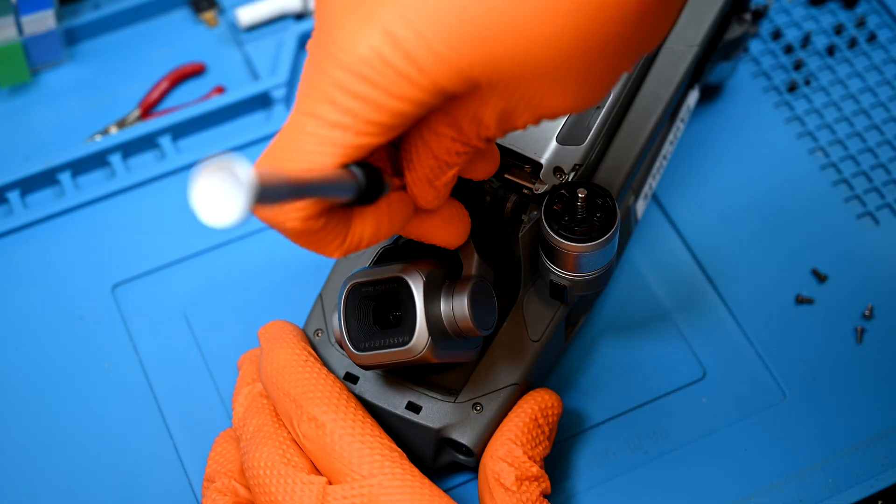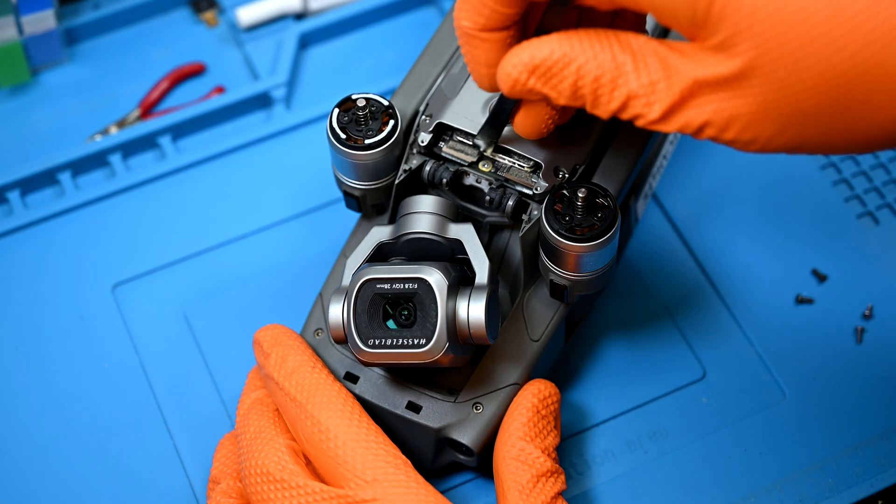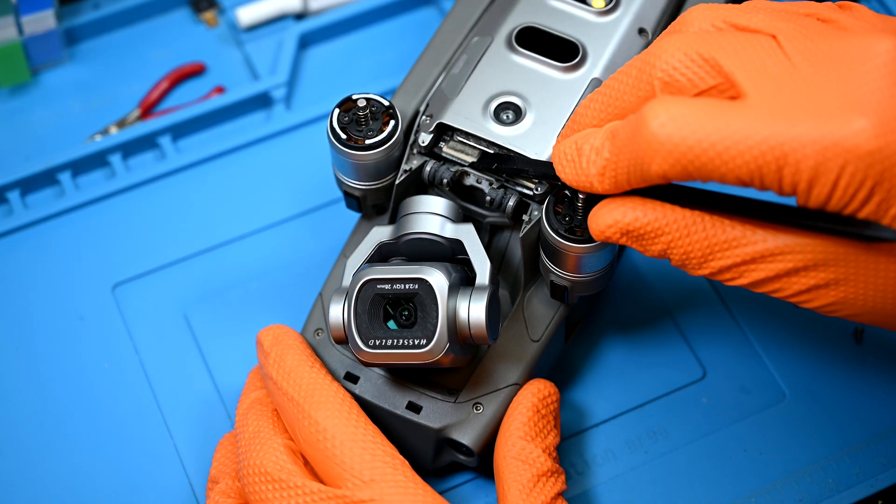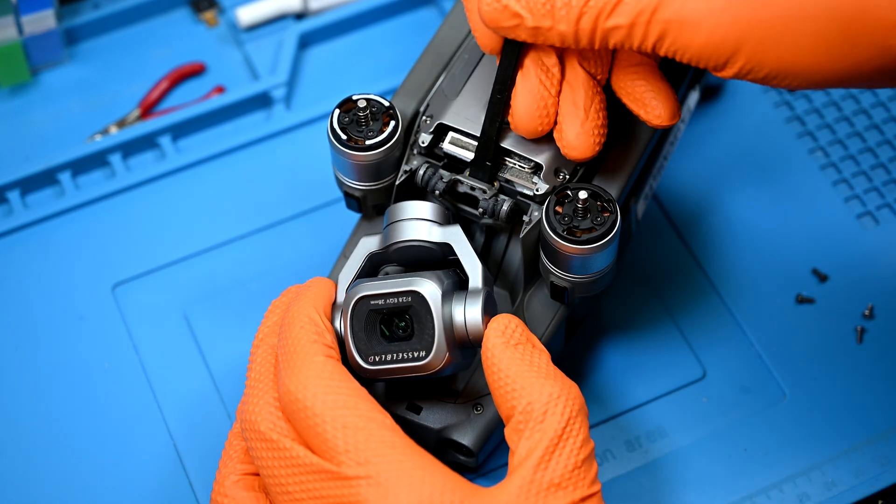Under the baffle you'll find two more hex screws that secure the back of the gimbal to the drone. A single lego style connector to my left needs to be disconnected. The gimbal assembly can then be lifted from the bottom and slid out from the groove at the top.